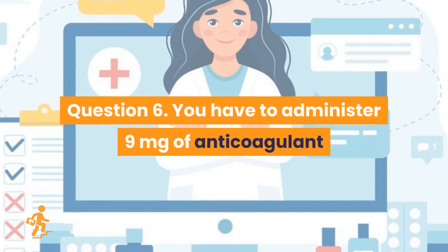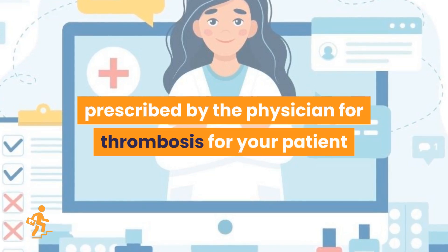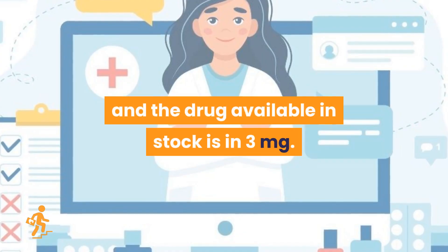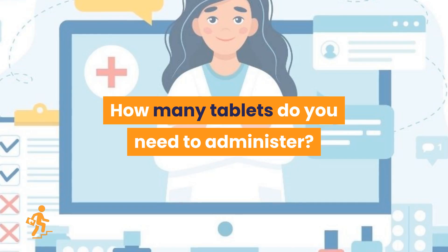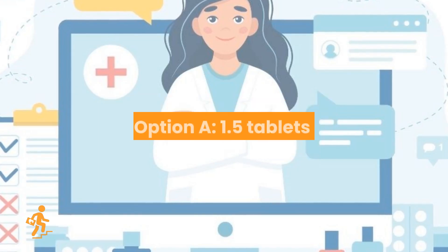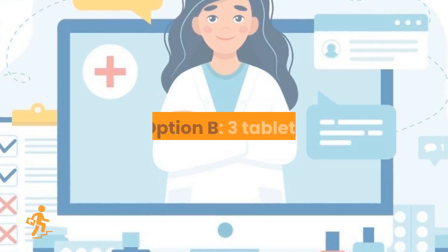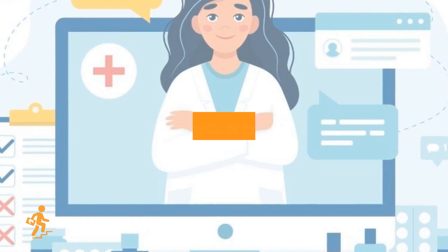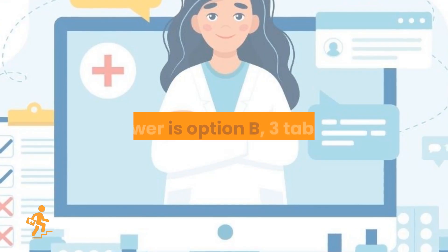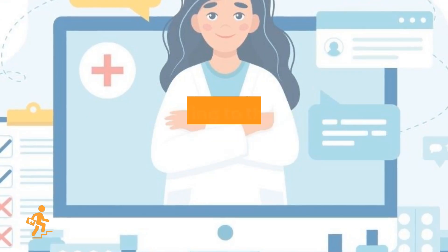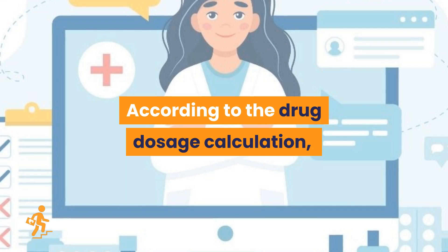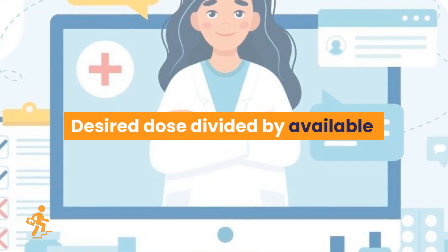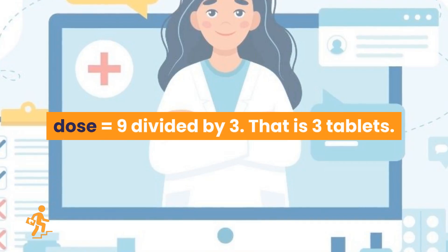Question 6. You have to administer 9 mg of anticoagulant prescribed by the physician for thrombosis for your patient, and the drug available in stock is 3 mg. How many tablets do you need to administer? Option A: 1.5 tablets. Option B: 3 tablets. Option C: 4 tablets. Option D: 6 tablets. Answer is Option B, 3 tablets. Desired dose divided by available dose: 9 divided by 3 equals 3 tablets.